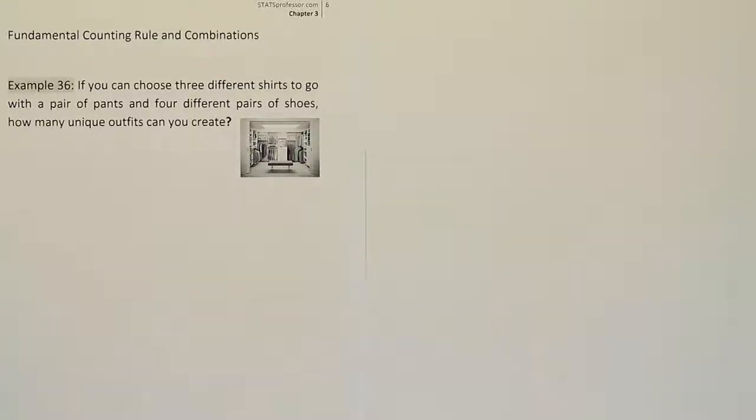So if you have a task that requires two steps, and you have m ways the first thing can be done, and k ways the next thing can be done, you're saying that the total number of ways the thing can be finished is m times k. So that's the logic of the fundamental counting rule.